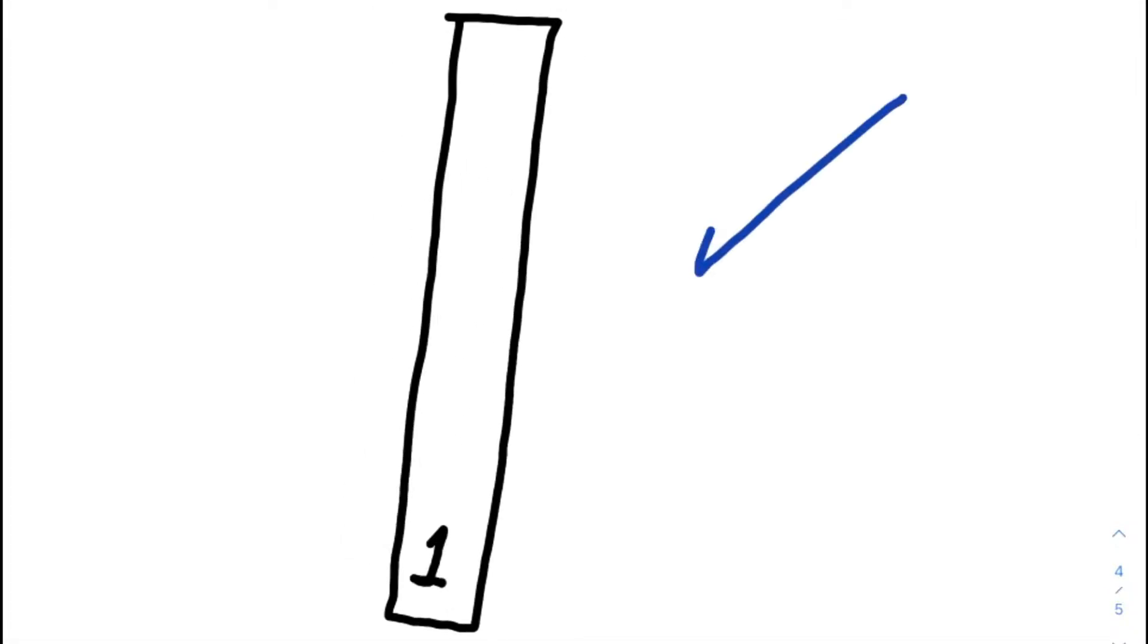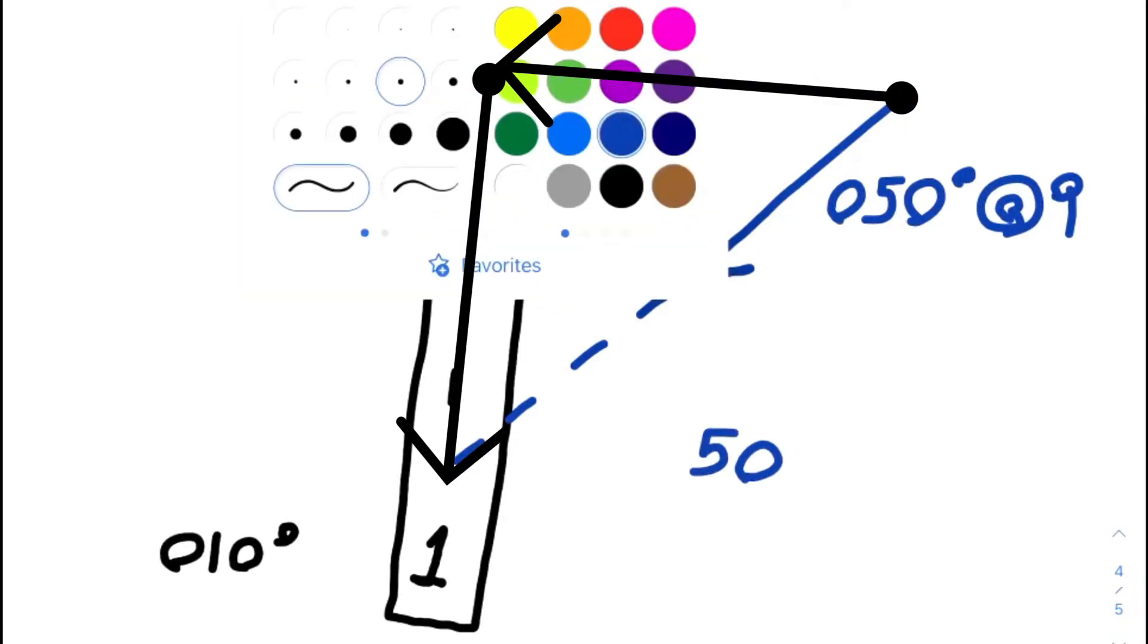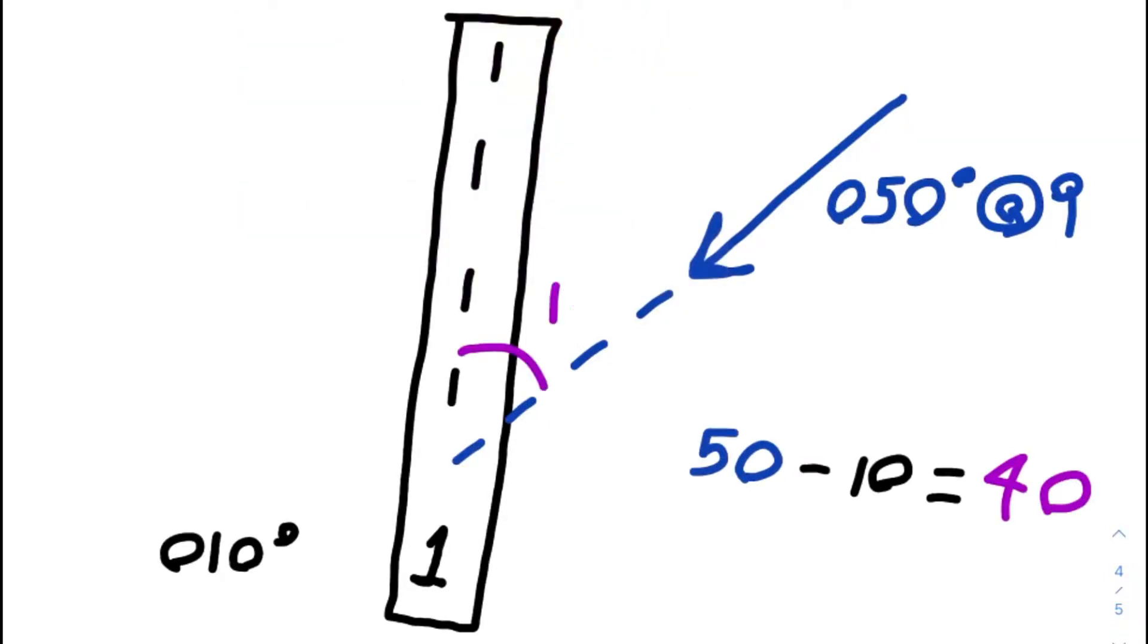To understand what the wind component chart just did, let's draw the vector for the wind. From a heading of 050 degrees at nine knots, we can see the angle it crosses the runway. Using the runway heading as our reference line, the wind vector could be broken down into a vector that is aligned with that runway and another that is across it.